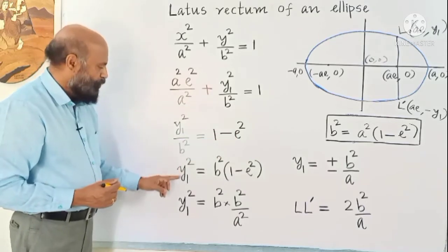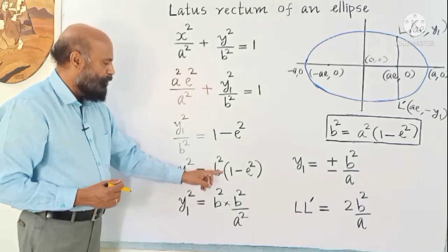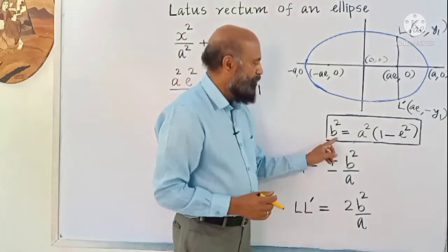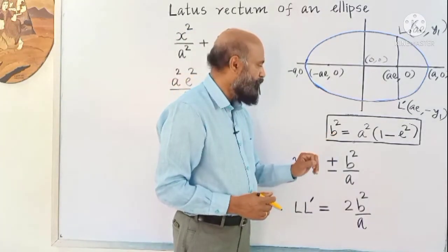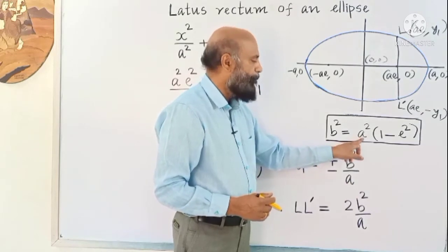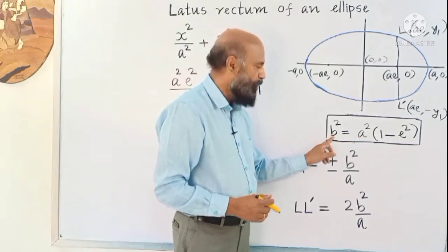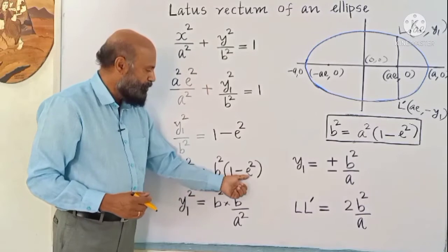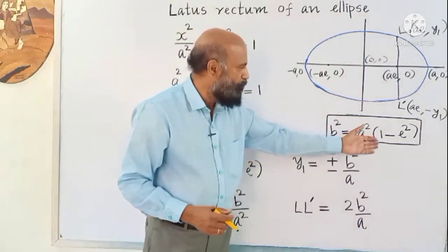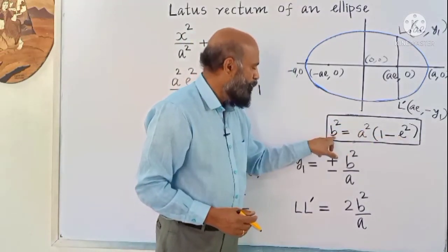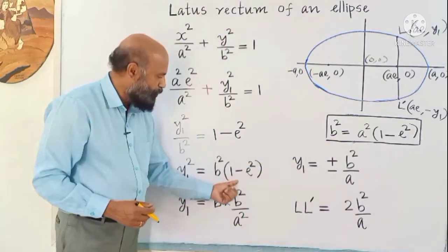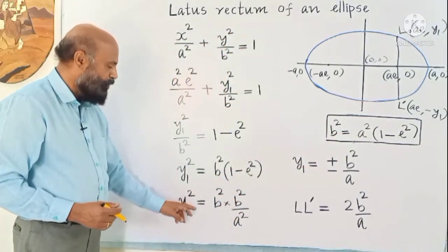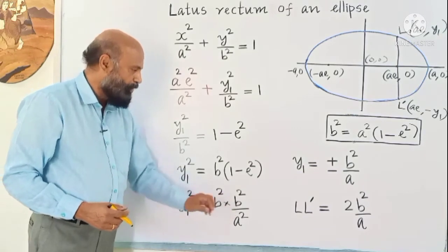Taking b² to the other side gives y₁² = b²(1 − e²). Now using the relation connecting the semi-major axis a and semi-minor axis b: b² = a²(1 − e²), so 1 − e² = b² / a². Substituting, we get y₁² = b² · (b² / a²).